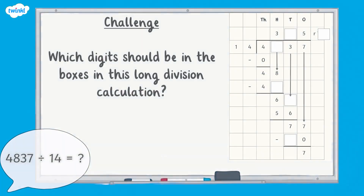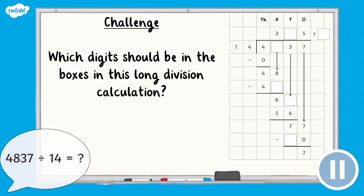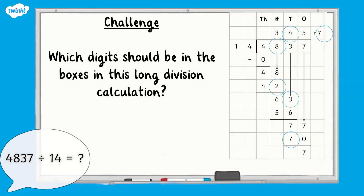Now it's time for a challenge. You need to find out which digits are missing from each of the boxes in the division calculation. Pause the video here and have a go. Well done if you identified the missing numbers. I hope this video has helped you to understand how to use the long division method when dividing by a two-digit number with a remainder. Make sure you head to the Twinkle website to check out more videos. See you next time!